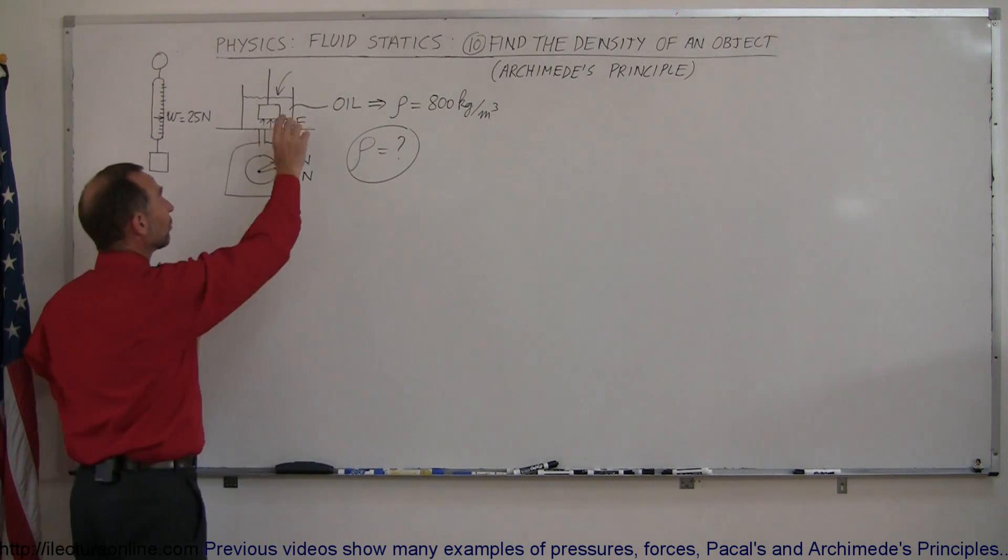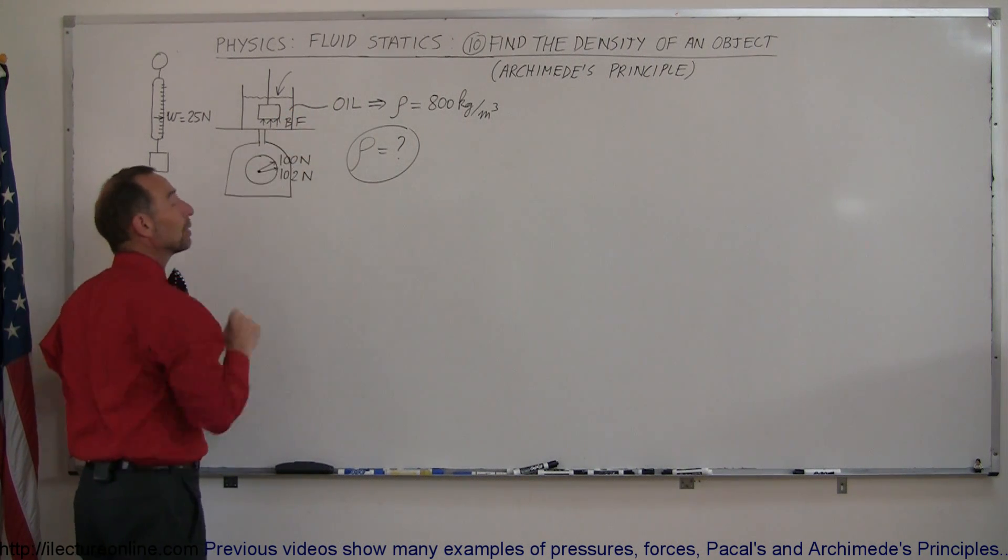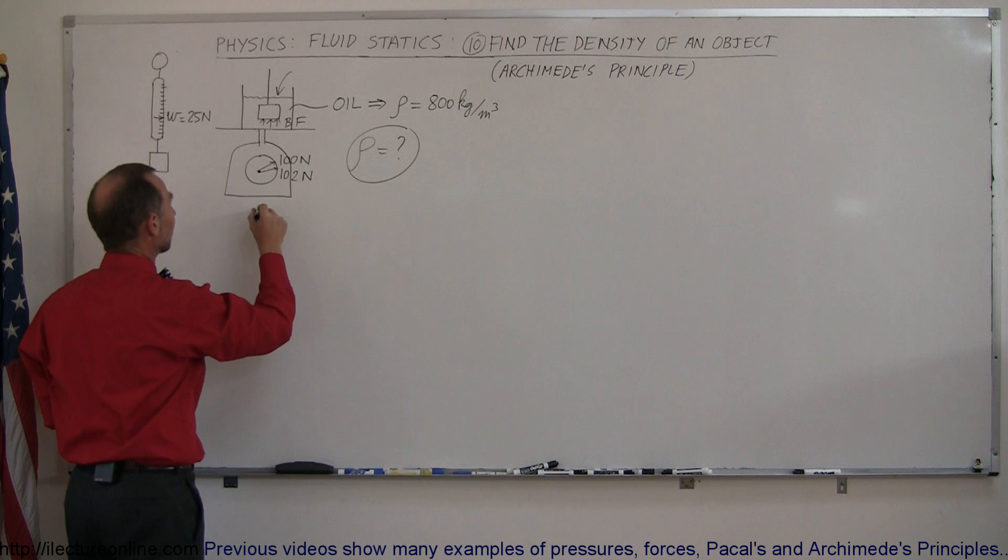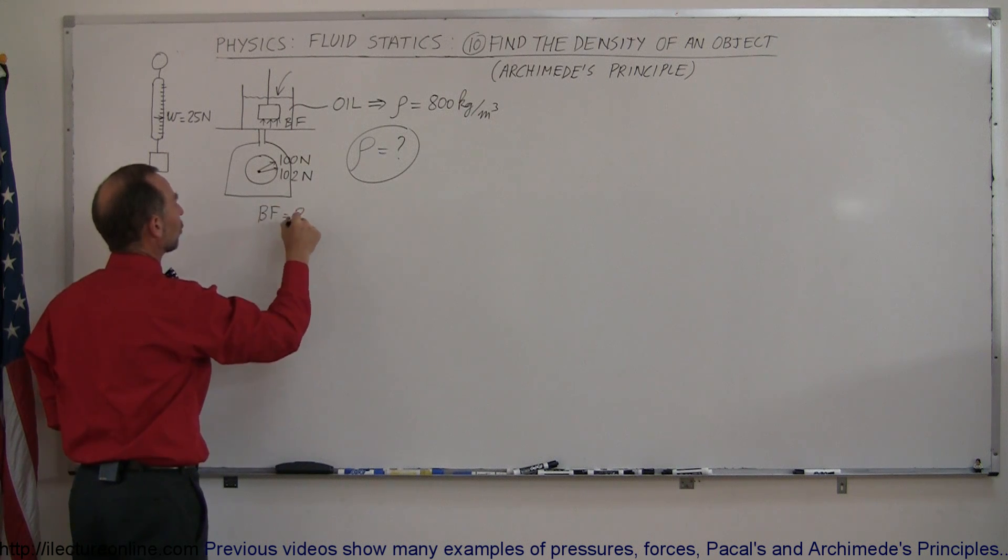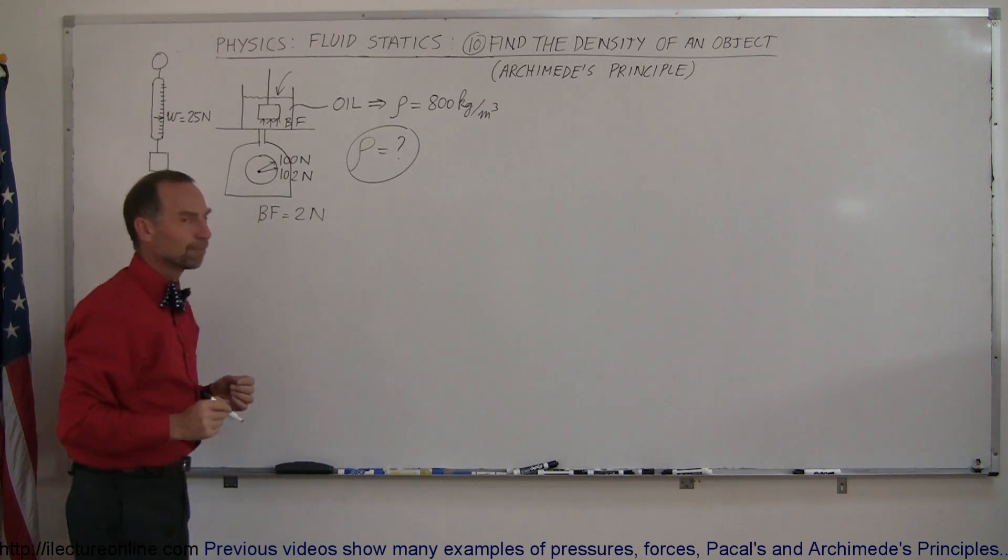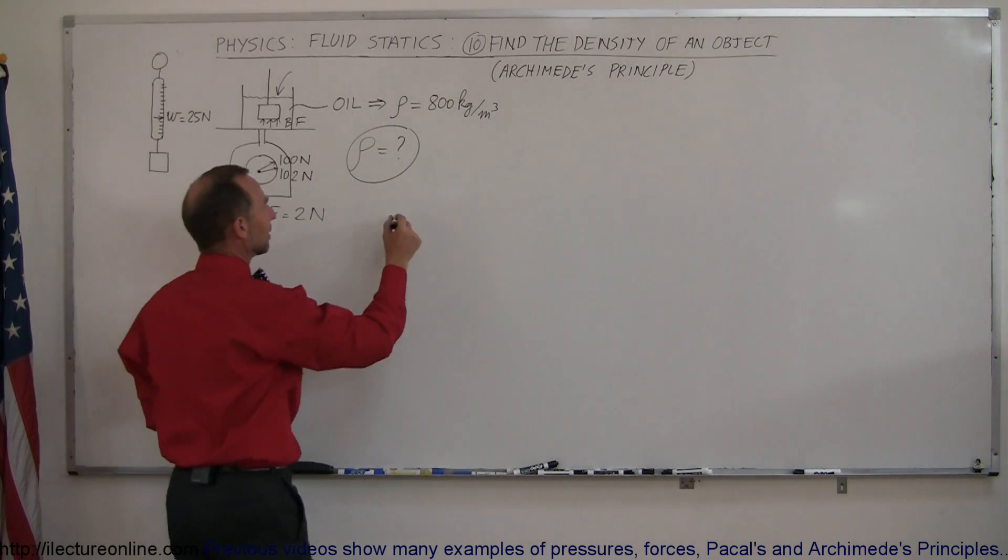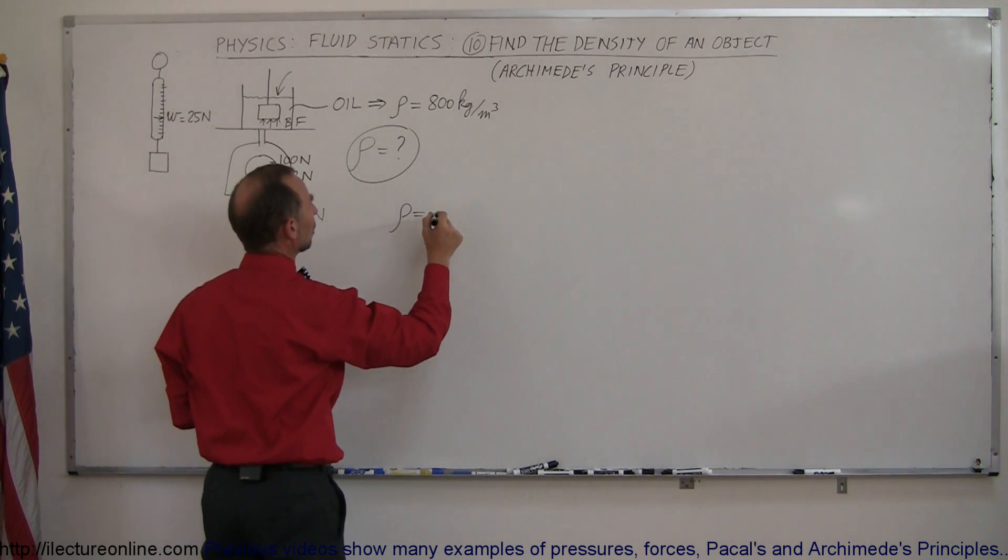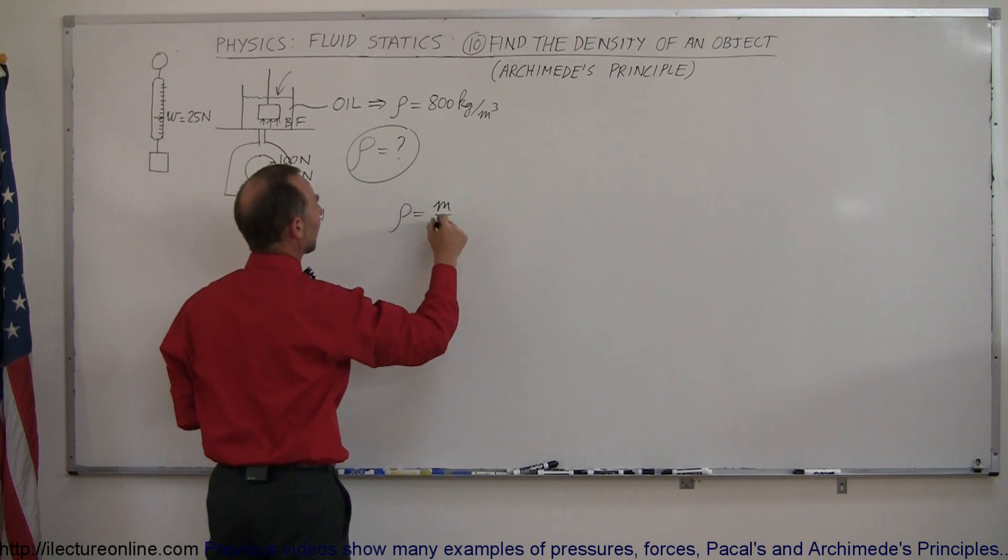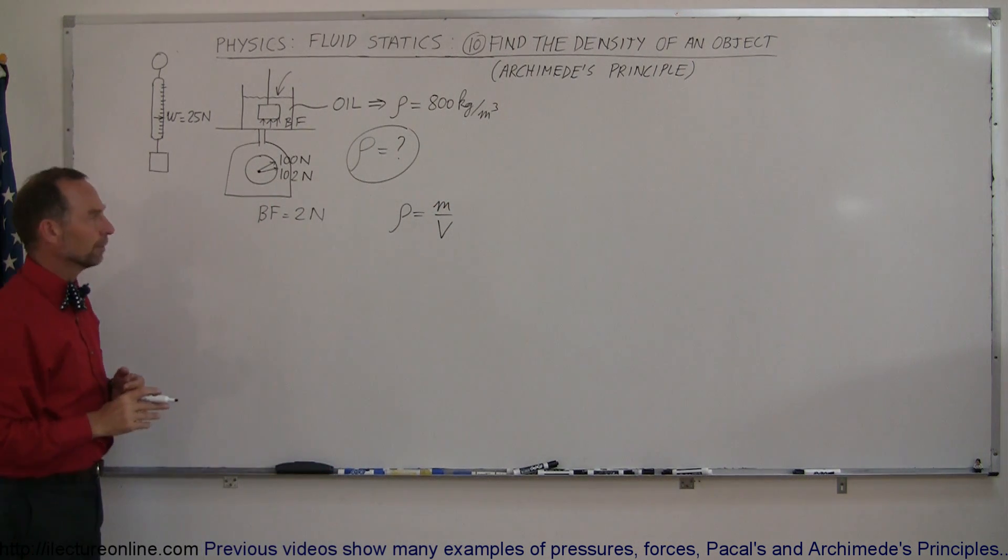And it turns out that the buoyancy force simply is the difference between those two readings. So in this case, we can say that the buoyancy force is equal to 2 newtons. Alright, so now we need to find the density, and we can say that the density is equal to the mass divided by the volume, and so we need to find the volume.